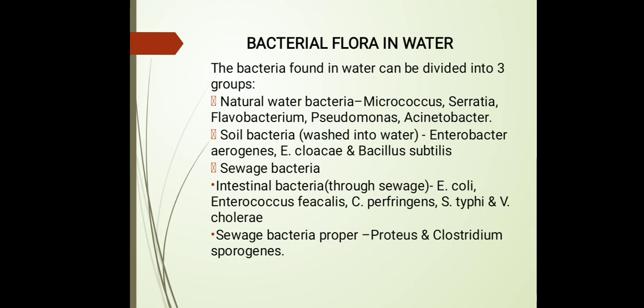Just as we have bacterial flora in our own body, we also have bacterial flora in water. The bacteria found in water can be divided into three categories: natural water bacteria, soil bacteria, and sewage bacteria. Natural water bacteria include Micrococcus, Sarcina, Flavobacterium, Pseudomonas, and Acinetobacter. Soil bacteria can be washed into water — examples include Enterobacter aerogenes, Enterobacter cloacae, and Bacillus subtilis.